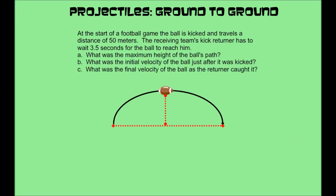The type of problem we're going to be studying looks like this: at the start of a football game, the ball is kicked and travels a distance of 50 meters. The receiving team's kick returner has to wait 3.5 seconds for the ball to reach him. We want to know three things: A, what is the maximum height of the ball's path? B, what was the initial velocity of the ball just after it was kicked? And C, what was the final velocity of the ball as the returner caught it?